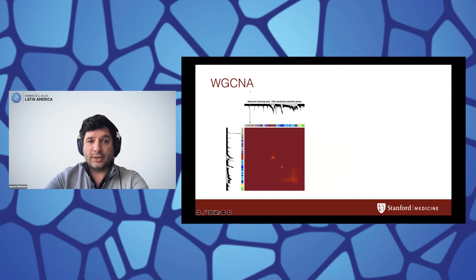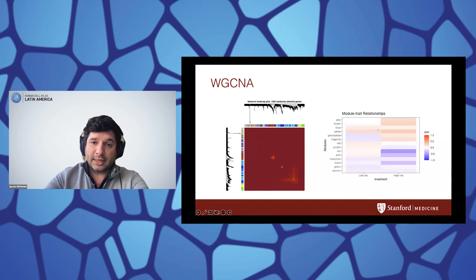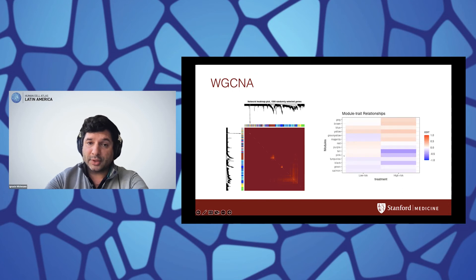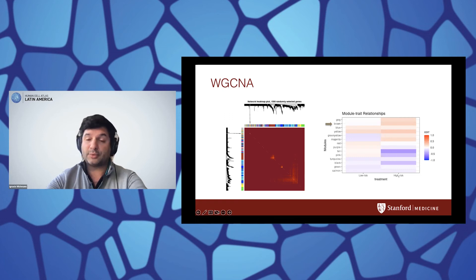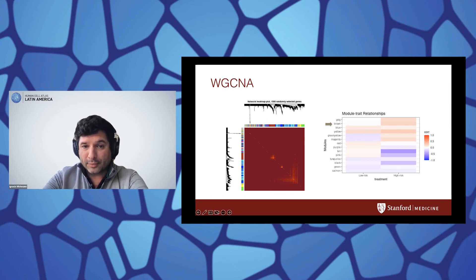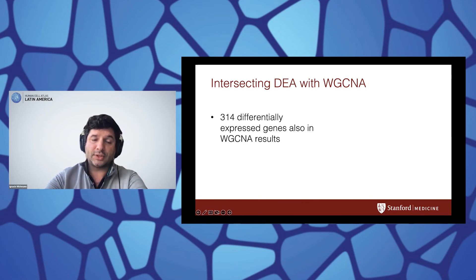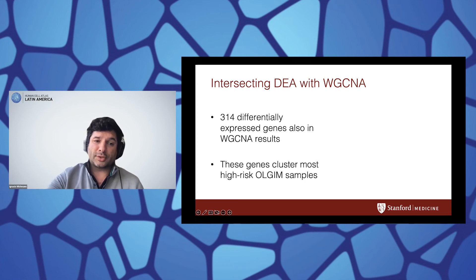In parallel with this, we performed weighted gene co-expression network analysis (WGCNA) to identify modules of co-expressed genes, identifying 14 different co-expression modules in total. These modules were then associated with our phenotypes — high-risk and low-risk samples. We focused mainly on the brown module, which was very enriched in high-risk samples, meaning genes from the brown module were highly expressed in high-risk samples. The other focus was the purple module, which was highly expressed among the low-risk but expression was lost in the high-risk samples. Using the intersection of differential expression analysis and WGCNA, we came to a total of 340 differentially expressed genes that were also co-expressed and associated with this high-risk signature.